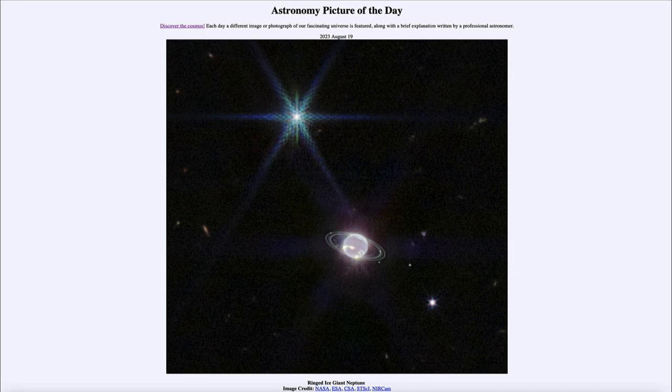So here we get to see the image of Neptune in the infrared from the Webb Space Telescope, and in addition we can see several of its moons including the large moon Triton visible off above and slightly to the left of Neptune. That was our picture of the day for August 19th of 2023. It was titled Ringed Ice Giant Neptune. We'll be back again tomorrow for the next picture, so until then, have a great day everyone and I will see you in class.